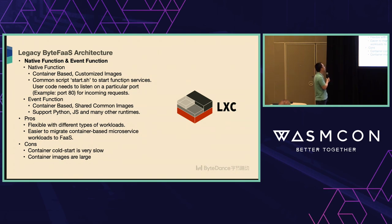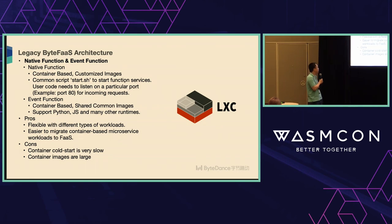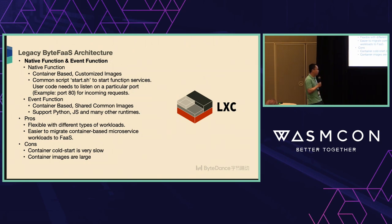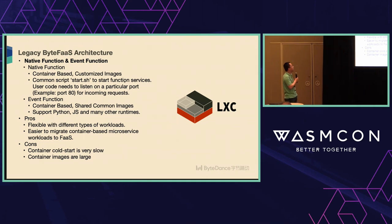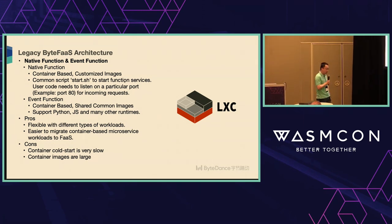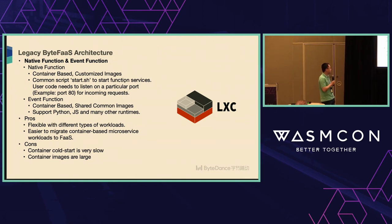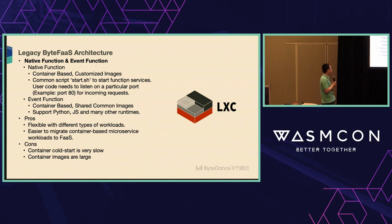The pros of these two function types are that they are flexible — we can provide users with different types of workloads, and it's easier to migrate container-based microservices workloads to ByFast, since many workloads use Go or other languages. The cons are well-known: container cold-start is very slow, it takes some time to get started, and container images are usually very large.